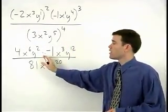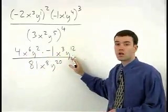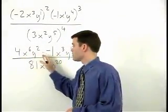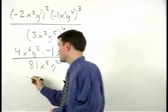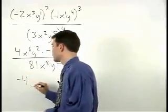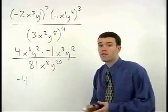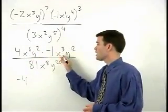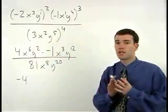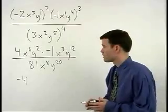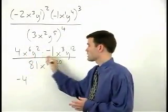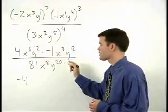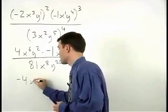Next, we apply our product rule across the numerator. Multiplying the two coefficients, we get negative 4. Remember that the product rule states that when multiplying powers that have the same base, we add their exponents. So we have x to the sixth times x to the third, which is x to the sixth plus 3, or x to the ninth.